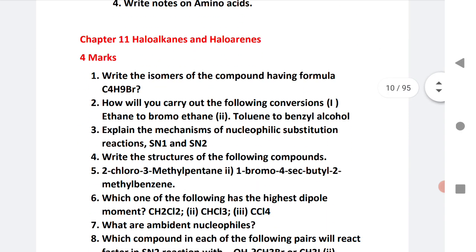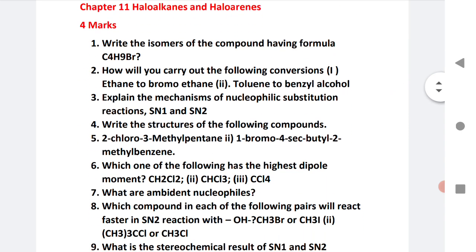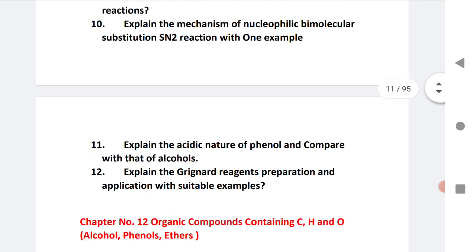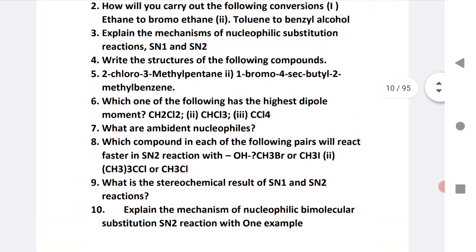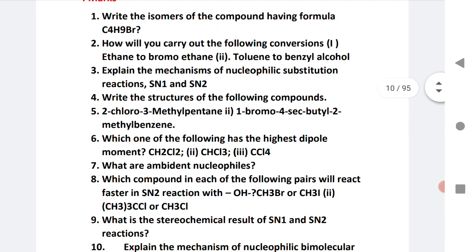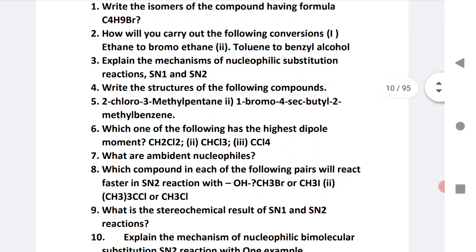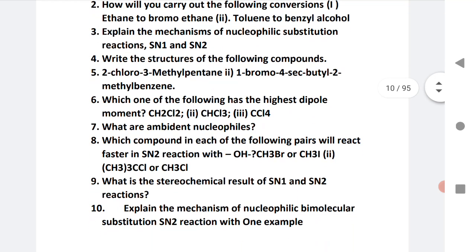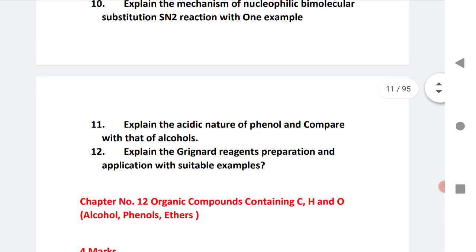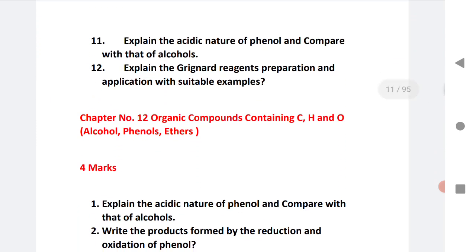Next is Halo Alkanes and Halo Arenes, that is for 4 marks. I have given here 11 questions. Practice these questions to get 4 marks. Most of the questions are mostly the most important. And among them is mechanism of nucleophilic substitution SN1 and SN2, very important. And the tenth one is also very important question. Practice this, definitely will get 4 marks. For both the states.